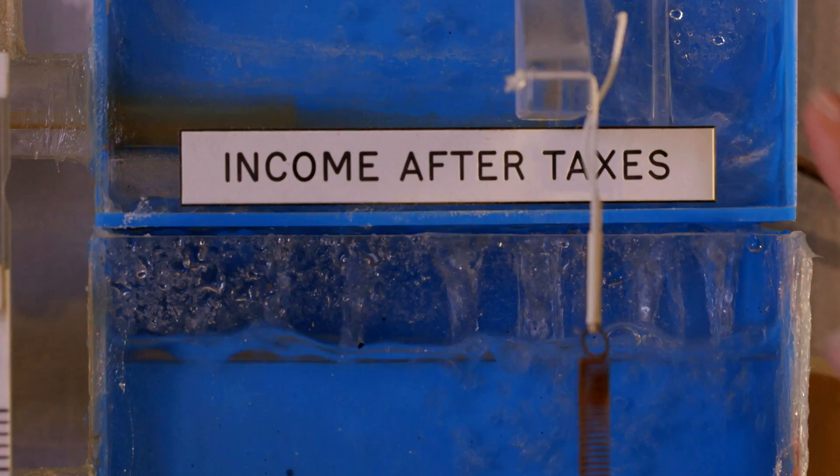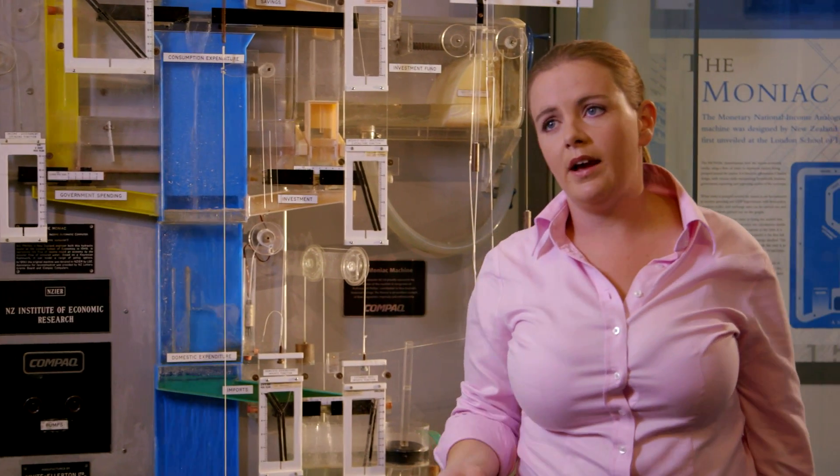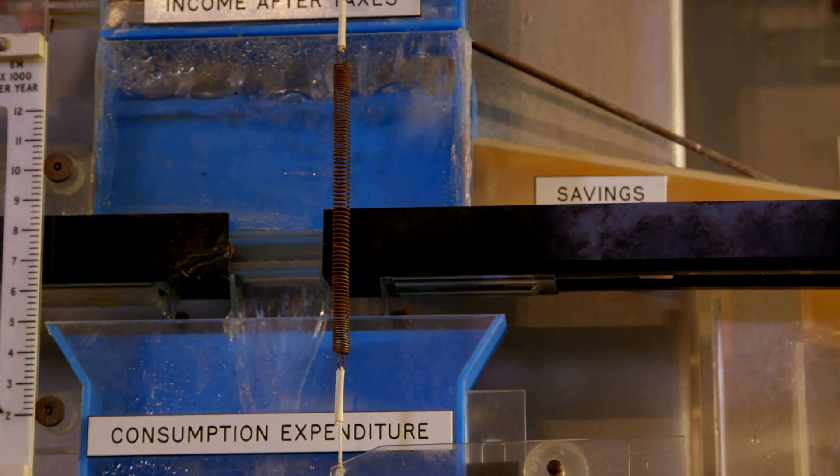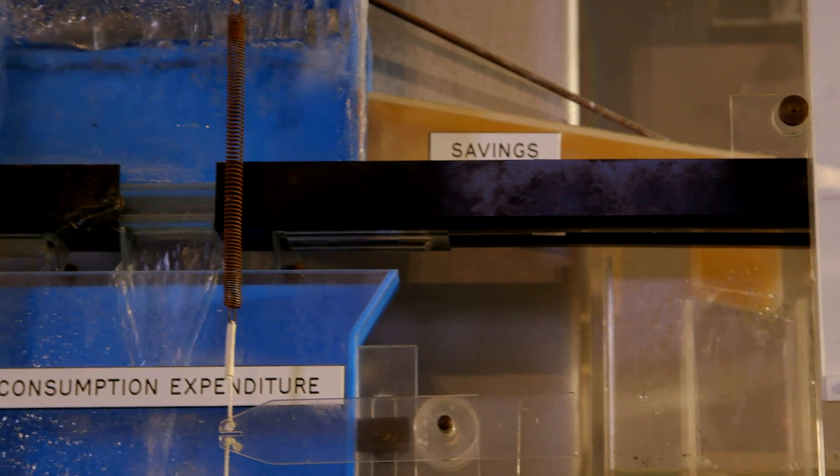The income that is after taxes, this is where it reaches the households, and the households have a choice to make. They have to choose between how much they would like to save, and then what they don't save, they consume.